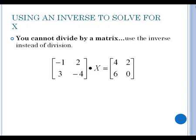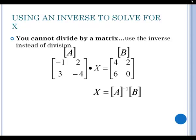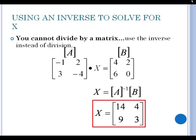We have matrix A as negative 1, 2, 3, and negative 4. We have matrix B as 4, 2, 6, and 0. And A is being multiplied by x to equal B. So you would normally divide by matrix A, but we don't divide by matrices. Instead we use their inverse. So x would be equal to the inverse of matrix A times B. When you enter matrix A in your calculator and matrix B in your calculator, you want to do A inverse times B in order to solve for x. And you should get 14, 4, 9, and 3 for your answer when you do the inverse.